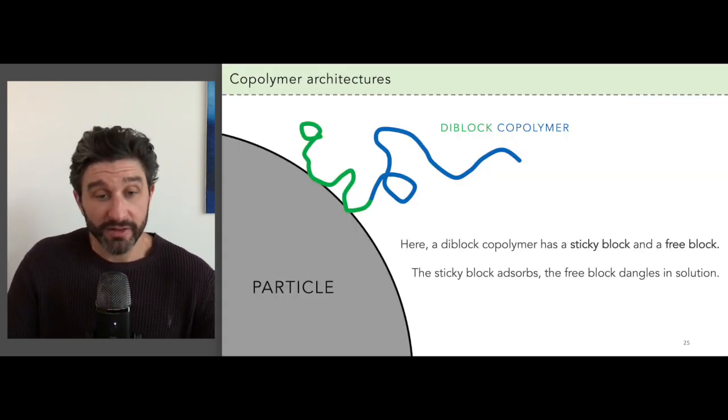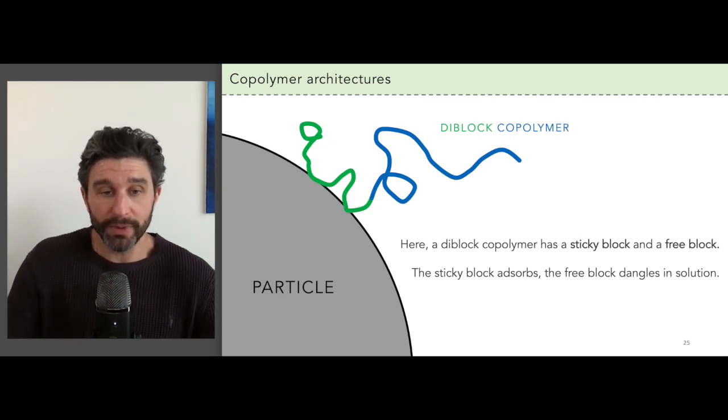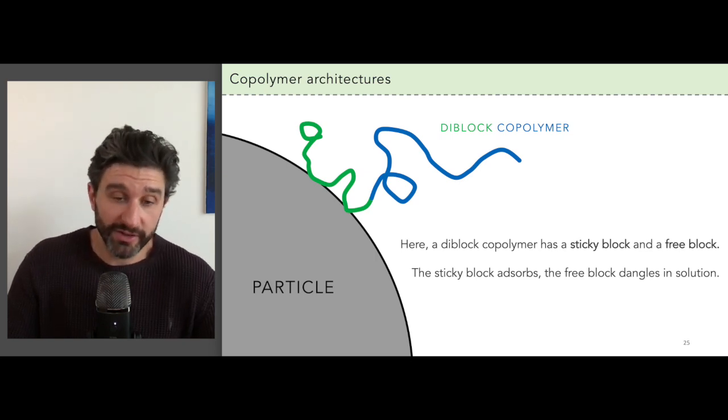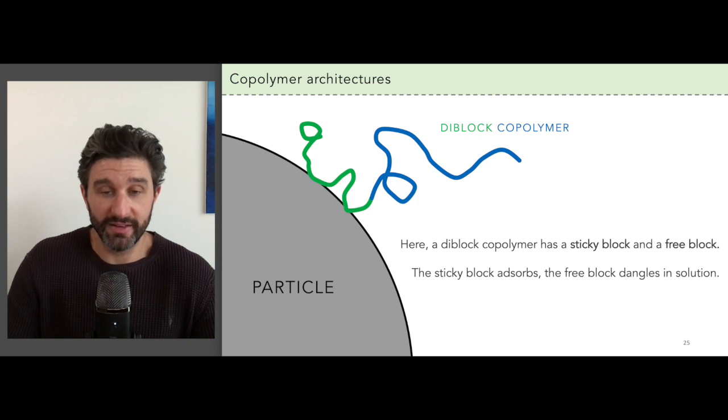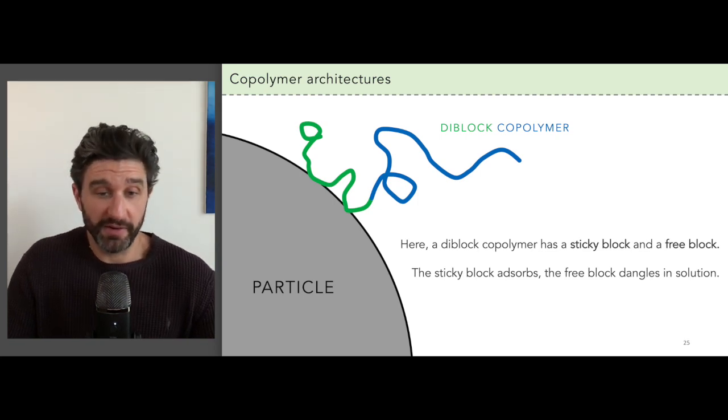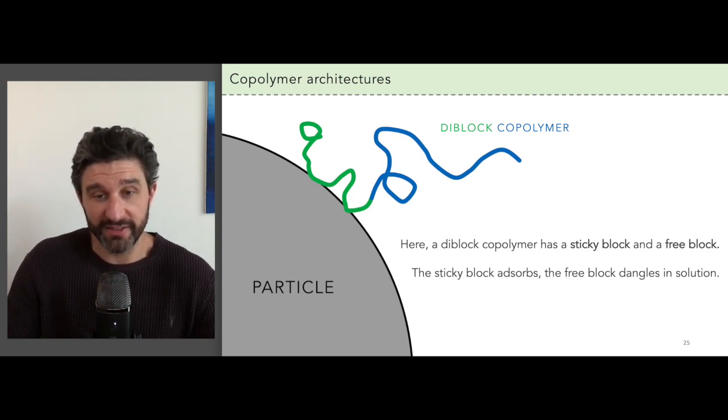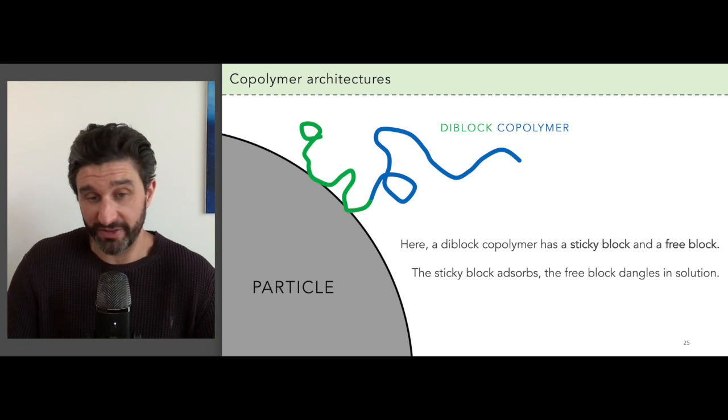One block can be designed to have sticky interactions with particle surfaces. This block will anchor the polymer, while the other block can be inert and non-absorbing, so that it extends into the solvent as a long tail. This tail serves as a good micropillow, and we also can avoid issues with bridging flocculation because the inert tails don't adsorb to the particle surfaces.